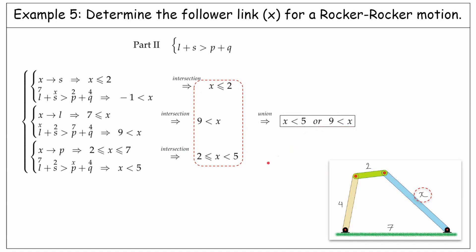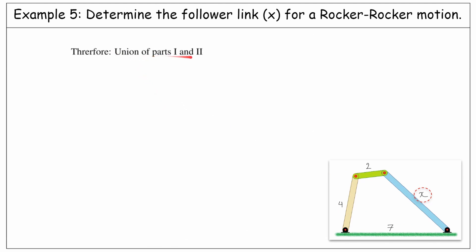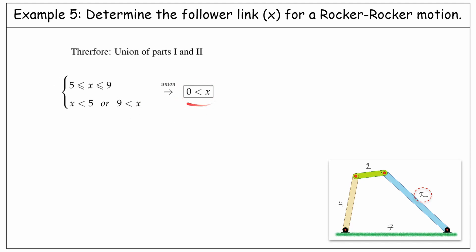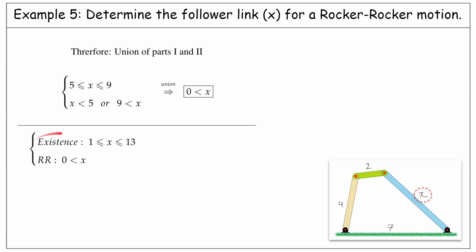Now we need to take a union from the solutions for the first and second parts. The first part says X between 5 and 9. The second part says X less than 5 or more than 9. Taking the union of the two, we will have X can be any value. But of course, it should be greater than 0 since it represents a length. So the requirement for X for having a rocker-rocker motion is just being any value greater than 0. On the other hand, for the existence of the linkage, X must be between 1 and 13. Taking the intersection of these two requirements gives X needs to be between 1 and 13, which is the final result to provide a rocker-rocker motion.